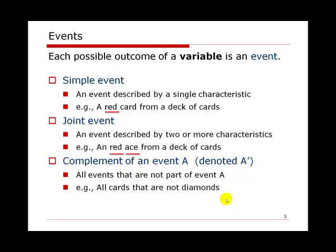A special event is called the complement of an event, which is denoted as A prime. All events that are not part of event A are called the complement of event A. For example, if we define event A as diamond, then all cards that are not diamond will be the complement of event A.